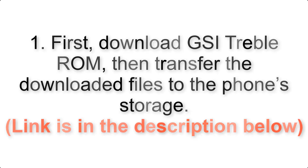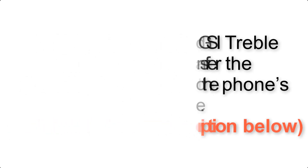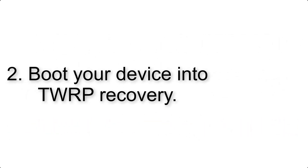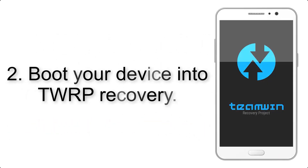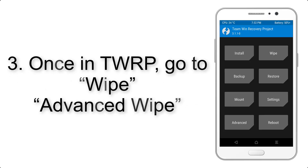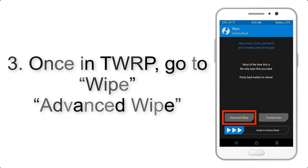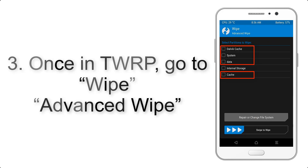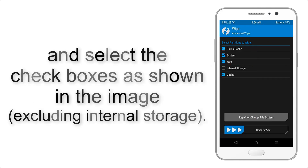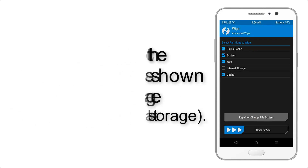Step 2: Boot your device into TWRP recovery. Once in TWRP, click on Wipe, then Advanced Wipe, and select the checkboxes as shown in the image, excluding internal storage.